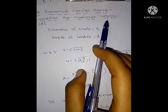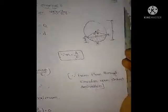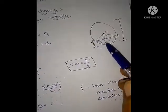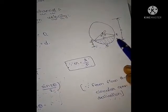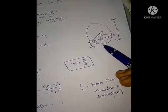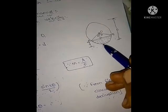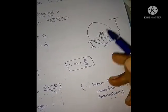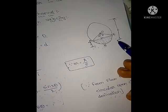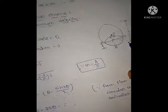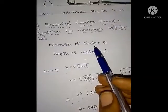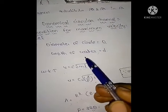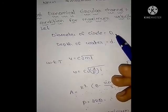Before going to the derivation, first consider the diagram. Consider a circular channel where some part is filled with water. We don't know what the height is, so consider the depth of water as small d and the diameter of the circle as capital D.